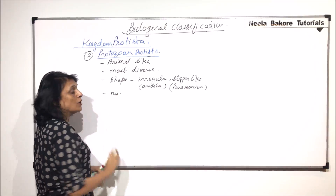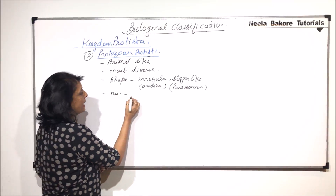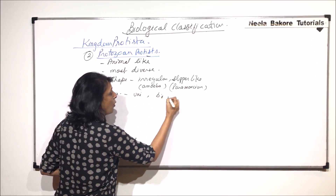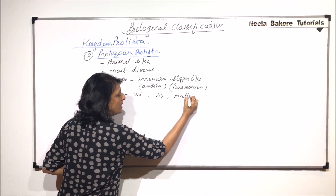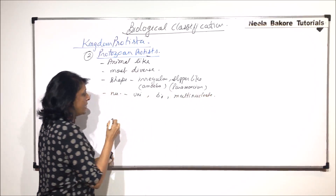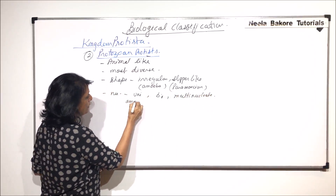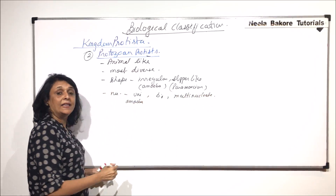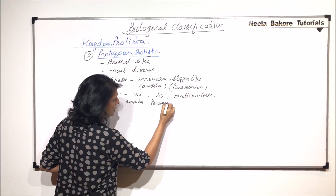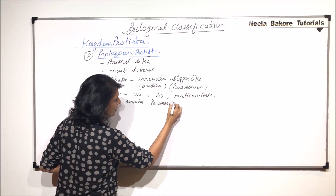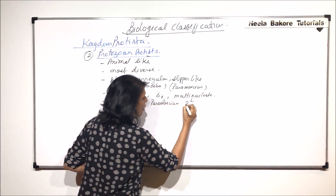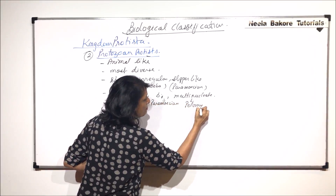If we talk about the nuclei, they can be uninucleate, binucleate, or multinucleate. For uninucleate, we can take the example of amoeba; for binucleate, the example of paramecium; and for multinucleate, we can take the example of Pelomyxa.